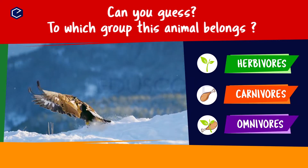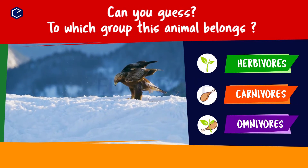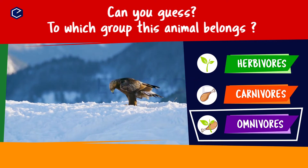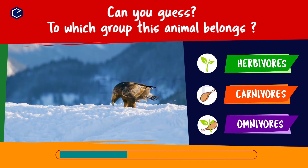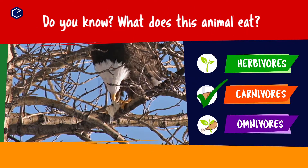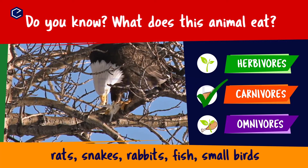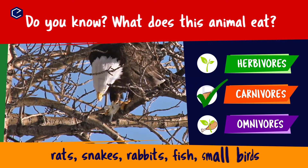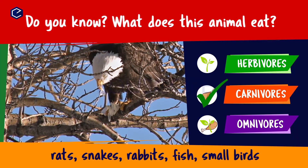Can you guess to which group this animal belongs? Herbivores, carnivores, omnivores. Do you know what this animal eats? An eagle eats rats, snakes, rabbits, fish, small birds. So eagle is a carnivore.